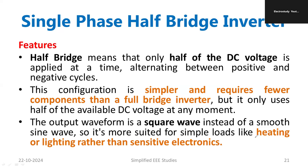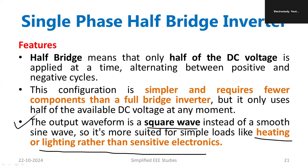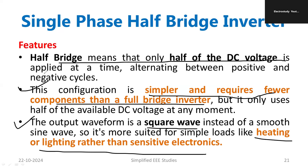It is only suitable for heating or lighting applications. For sensitive loads, the square wave is not convenient because of the high harmonic content. On the positive side, this configuration is simpler and has fewer components compared to the full-bridge inverter. Also, since it is a half-bridge, only half of the DC voltage is applied at a time, alternating between positive and negative half cycles, so the output magnitude is less than that of a single-phase full-bridge inverter.